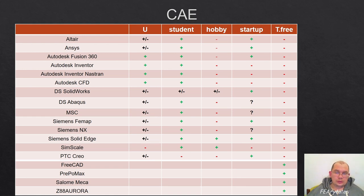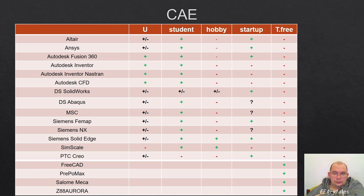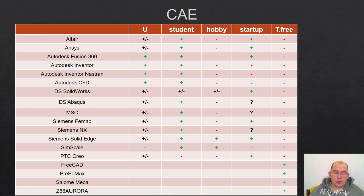SOLIDWORKS has a CAE module, and all relevant information was already discussed. Abaqus has a student version with large task-size limitations, but it's well enough for educational purposes. For universities it has a version with large discounts. MSC company has many products, and all can be used by universities and students — students can use them for free. Abaqus and FEMAP can be bought with large discounts.